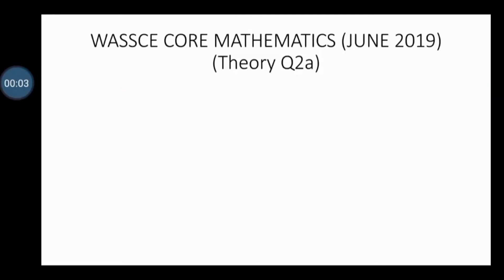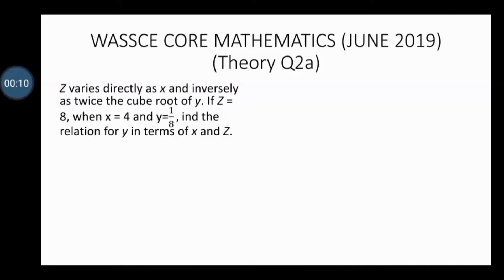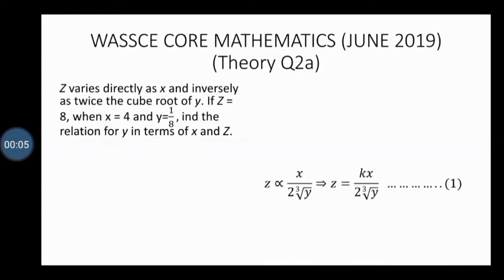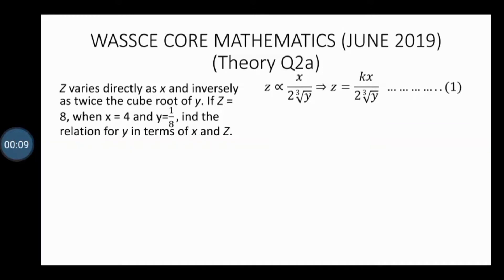June 2019 Equal Mathematics Theory Question 2a: Z varies directly as x and inversely as twice the cube root of y. Mathematically, the variation is presented as z varies directly as x and inversely as twice the cube root of y, which in equation form is z equals constant k multiplied by x over 2 times the cube root of y. We label this as equation 1.